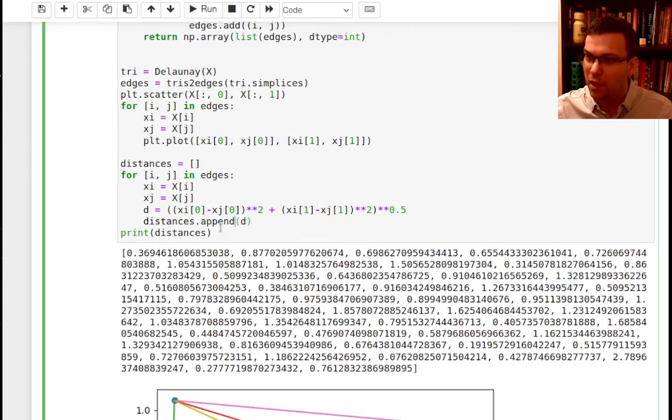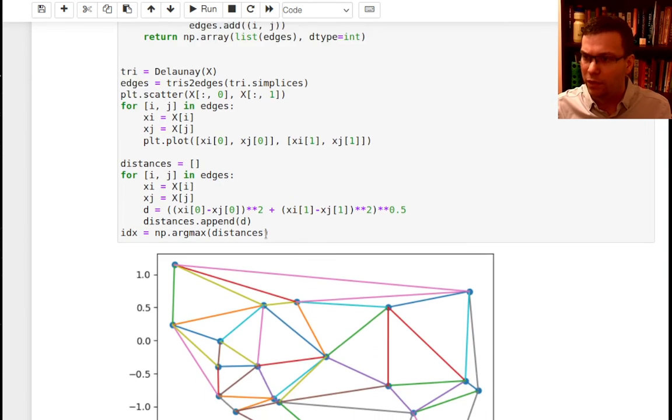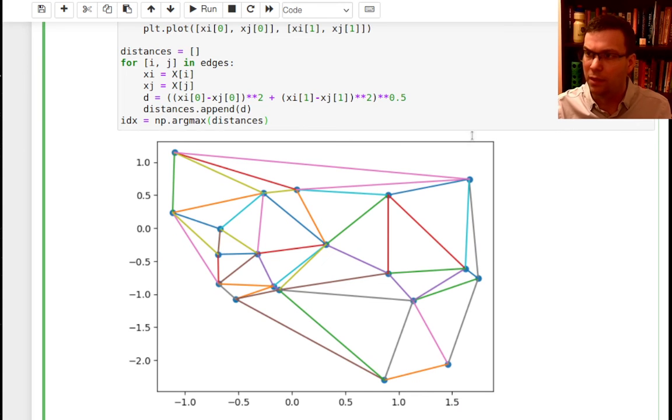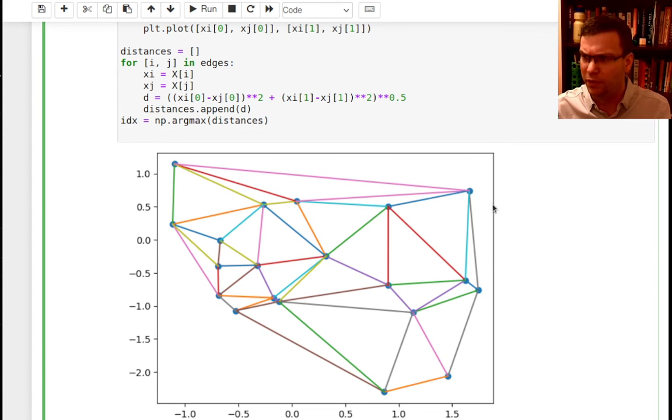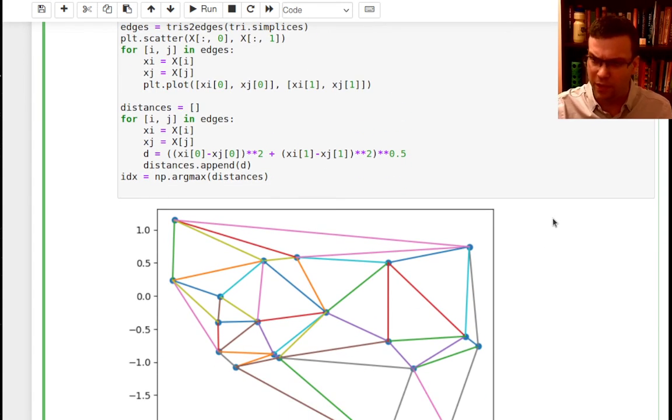Okay, anyway, that's a bunch of distances. Maybe I'll just, just to show you that this actually is working properly. Maybe I'll figure out what's the longest distance. I'll say idx is equal to np.argmax d, or distances. And I'll just plot that as a big line. So it looks like it's probably this one. Let's just see. I'll plot that as a dashed line there. So I'll say plt.plot.